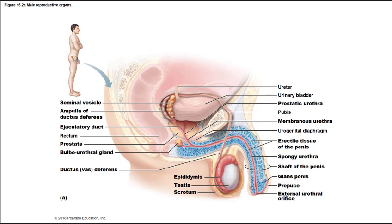To summarize the sperm pathway: sperm is produced in the seminiferous tubules, enters the epididymis as a temporary storage site, then enters the ductus or vas deferens — where a vasectomy would be performed. Moving alongside the bladder, the seminal vesicle contributes fluid, then at the ejaculatory duct the prostate contributes its secretions, followed by the bulbourethral gland. The final product then passes through the urethra.